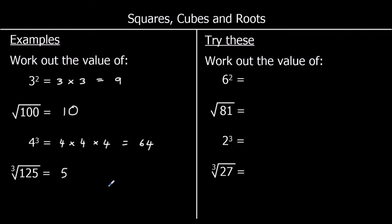Six squared means six times six, which is 36. The square root of 81: what number multiplied by itself makes 81? That is nine, because nine times nine is 81. Two cubed means two times two times two — two times two is four and four times two is eight. The cube root of 27: three, because three times three makes nine and nine times three makes 27.